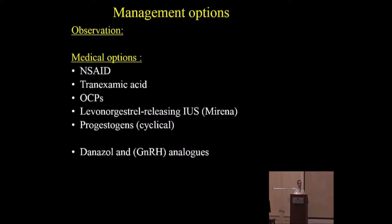Conservative management is an option only after a negative endometrial biopsy. It depends on the patient's symptoms — if they significantly interfere with daily activity, treatment is needed; otherwise a watch-and-wait approach is reasonable, as symptoms should settle by menopause if the cause is dysfunctional. NSAIDs are debated in the literature — they may help but are not definitive and should be supportive only. Always consider contraindications such as peptic ulcer, gastric upset, or asthma. Tranexamic acid is one of the best agents: 1 gram every 6 hours, very safe, no thrombosis risk based on current evidence.